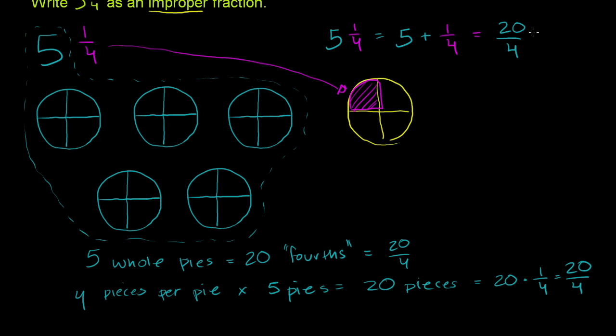And then this plus 1/4 is the same thing as plus 1/4. So if I have 20/4 and I add 1 more fourth to it, how many fourths do I have? Well, I have 21. I have 21/4. Or another way of thinking about it,